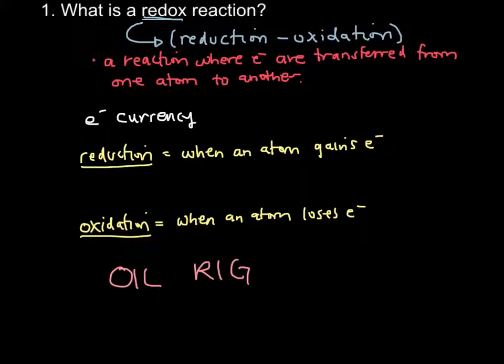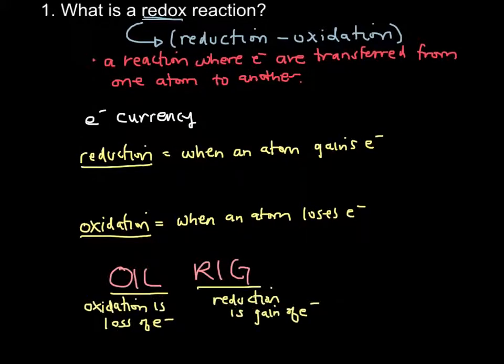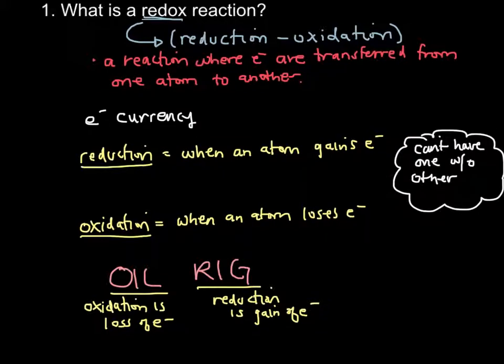An easy way to remember the difference between oxidation and reduction is the memory device OIL RIG: OIL stands for oxidation is loss, and RIG stands for reduction is gain of electrons. Something to keep in mind is that you can't have one process happening without the other. Because it is an electron transfer, the element that gains electrons is gaining them from an element that has lost electrons. Reduction and oxidation are not separate — they happen because of each other.